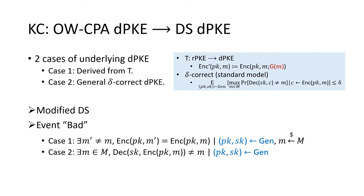These two events can be proved that they only happen with a small probability. Note that the probability is taken over the generation of key pair in both cases.